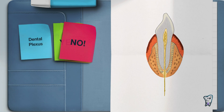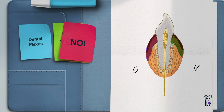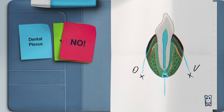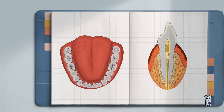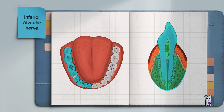The gingiva has additional innervation from the sensory nerves supplying the soft tissues positioned vestibularly and orally to the alveolar process. Therefore, to perform painless extraction, regardless of which tooth we are extracting, we always need to anesthetize three nerves: the alveolar, the oral, and the vestibular nerve.